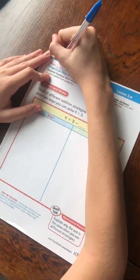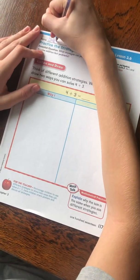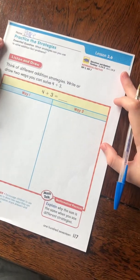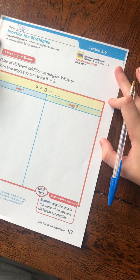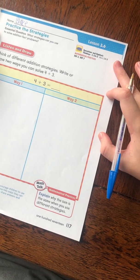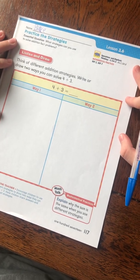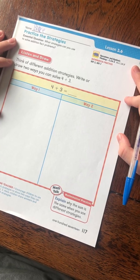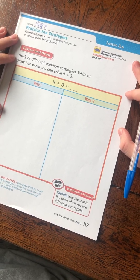First thing we do, always, is write your name. And the central question is, what strategies can you use to solve addition fact problems? And the directions say, think of different addition strategies. Write or draw two ways you can solve 4 plus 3.